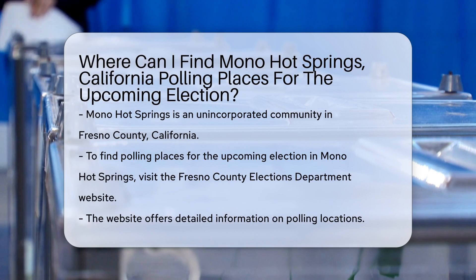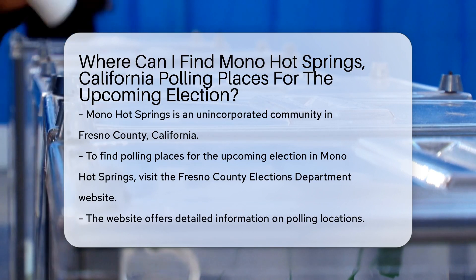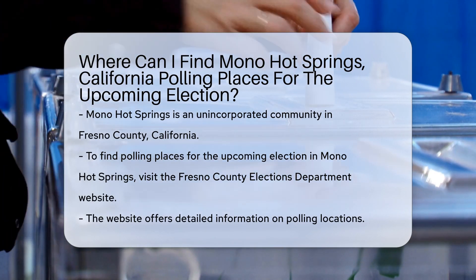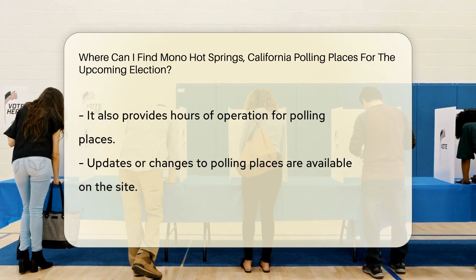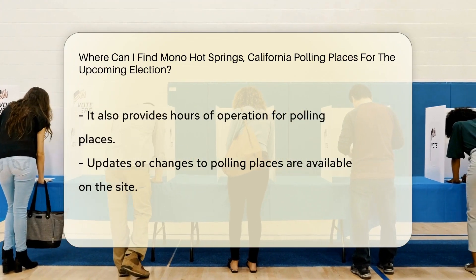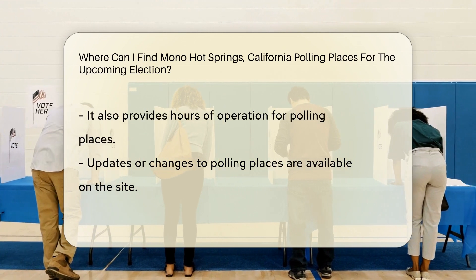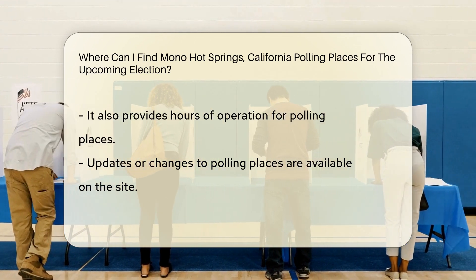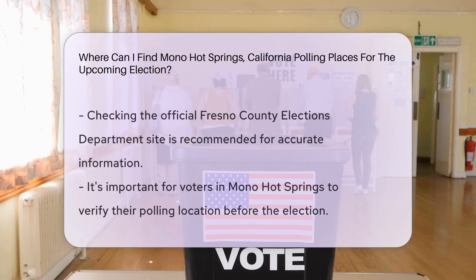Mono Hot Springs is an unincorporated community in Fresno County, California. To locate polling places for the upcoming election in Mono Hot Springs, you can visit the Fresno County Elections Department website. They provide detailed information on polling locations, hours of operation, and any updates or changes to the polling places.